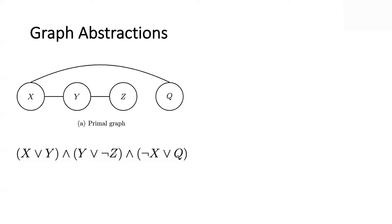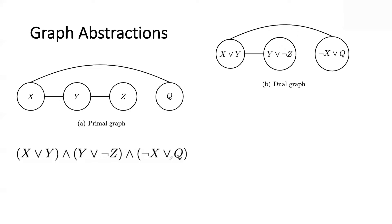The other type is called the dual graph. Can you guess what the nodes are? In the primal graph, the nodes were variables and the edges represented interactions — an edge when two variables appear in the same clause. In the dual graph, nodes are clauses. I have one node for each clause, and then I have an edge between two nodes — between two clauses — if they share a variable. So these two clauses share variable X, and these two share variable Y.